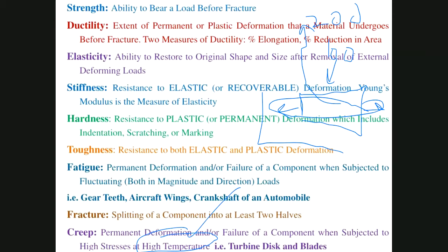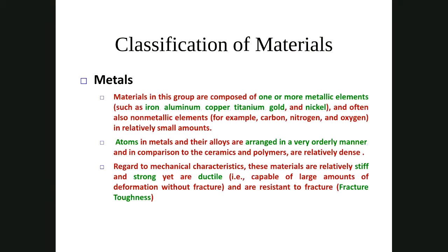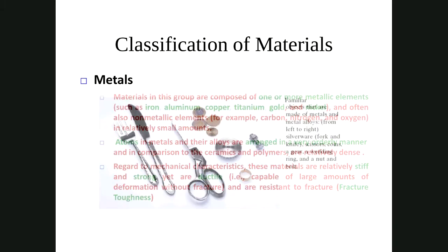Metals such as aluminium, copper, and titanium have atoms properly and regularly arranged in their crystal structure. This gives them high stiffness (high Young's modulus), high strength, ductility (they deform before fracturing), and moderate fracture toughness. These properties make metals widely used in engineering applications.